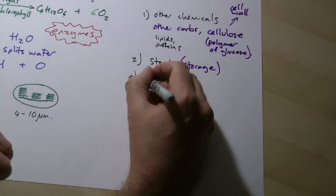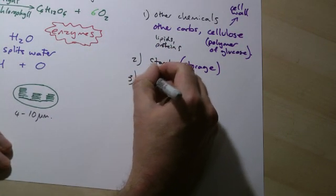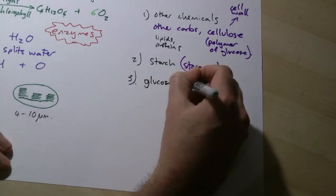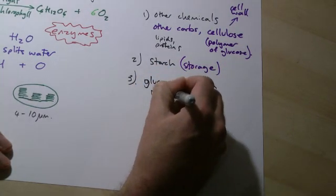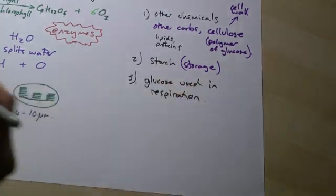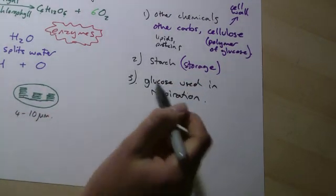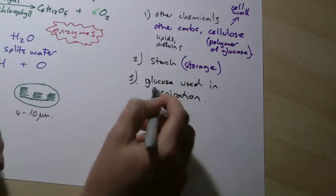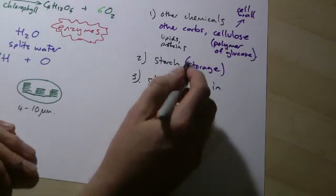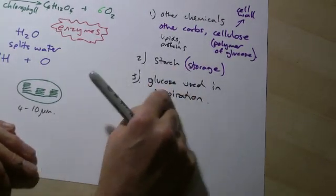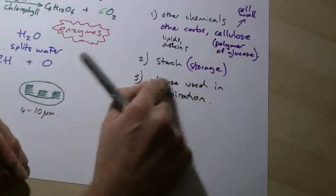The glucose is also used in, I should put this down, in respiration. People forget that plants also respire. But, of course, they do. Respiration is a chemical process that releases energy from chemicals. In this case, it would be glucose.